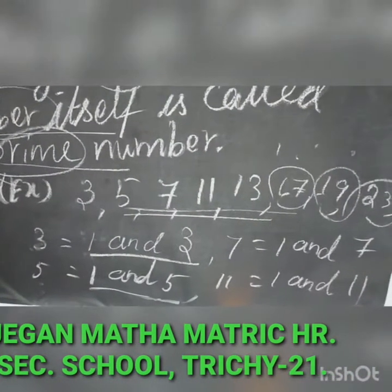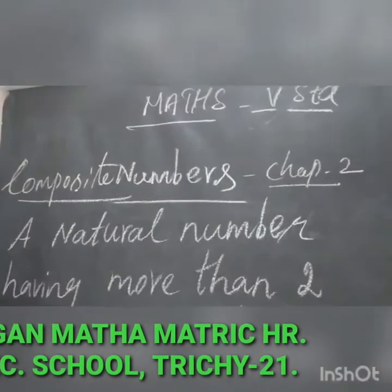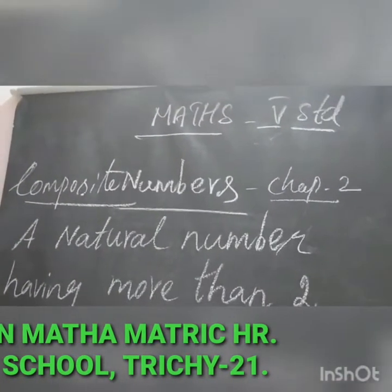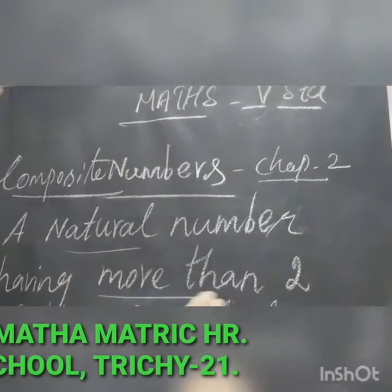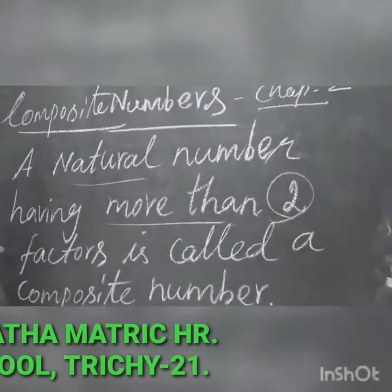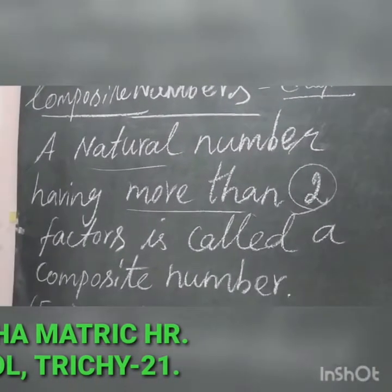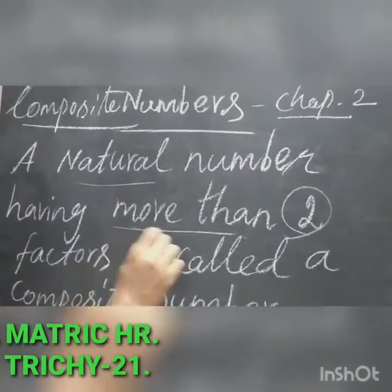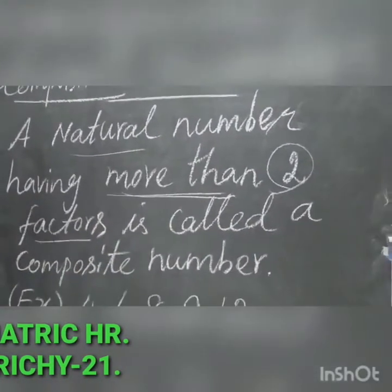Now let us see about the composite numbers. A natural number having more than 2 factors is called a composite number. Prime numbers have only 2 factors — 1 and the same number. Composite numbers have more than 2 factors.